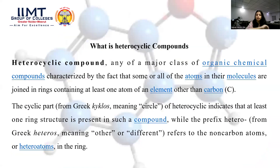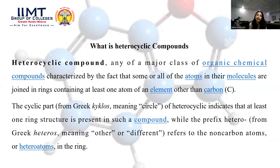The first thing that comes to our mind before starting any topic is what does 'heterocyclic compound' mean. If we cut the word 'heterocyclic' into two parts, it consists of 'hetero' and 'cyclic.' Hetero means different and cyclic means a closed structure. A closed structure requires a minimum of three carbons — it cannot be formed with just two carbons.